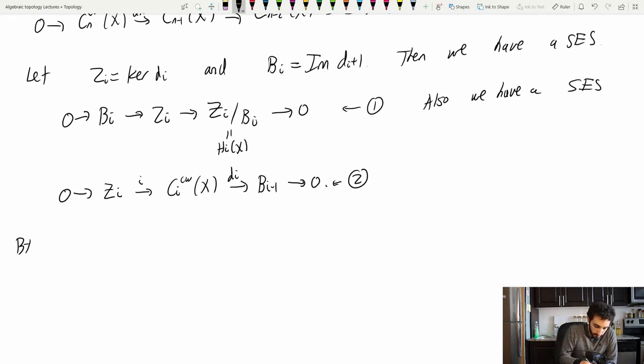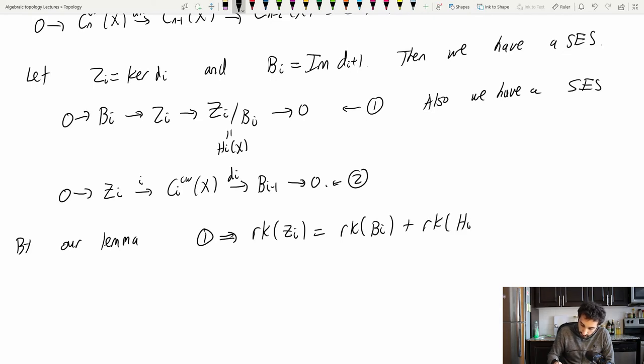All right, now, by our lemma, this first short exact sequence tells me that the rank of Zi is equal to the rank of Bi plus the rank of Hi. That's rank of Hi of X, right? And so 2 implies that the rank of Ci CW of X is equal to the rank of Zi plus the rank of Bi minus 1.